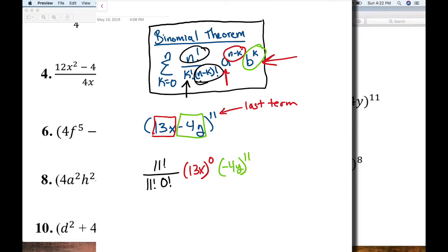And at this point, now it's just a matter of simplifying. So let's simplify this first. So I know that 0 factorial is 1. So I'm left with 11 factorial divided by 11 factorial. And I know that that simplifies to 1. So I can just say 1. 1 times 13 raised to the 0, 13x raised to the 0 power is also 1. So that's just 1. And now I have negative 4.